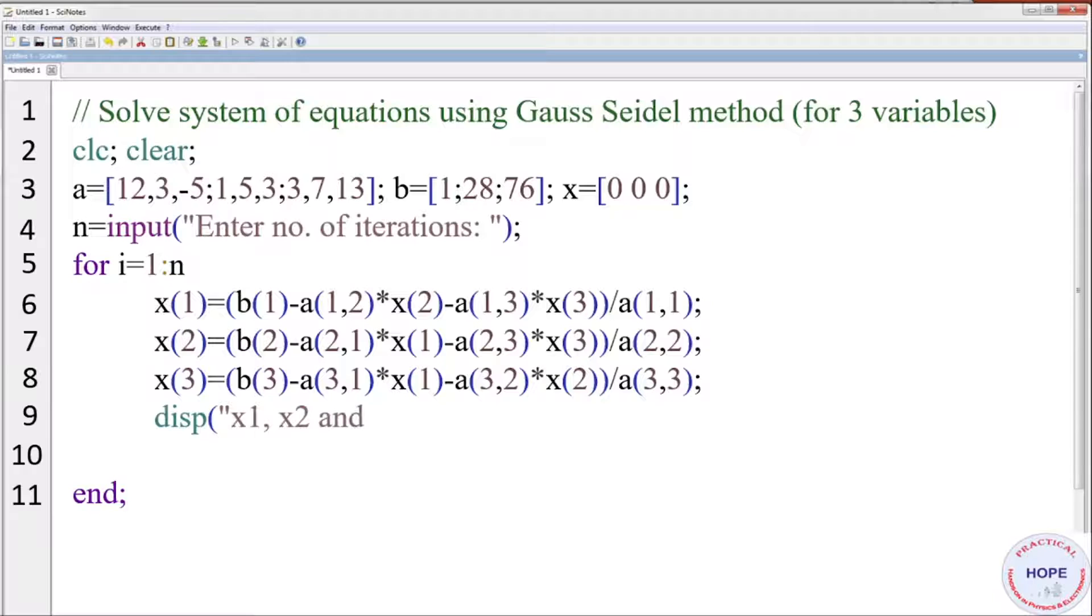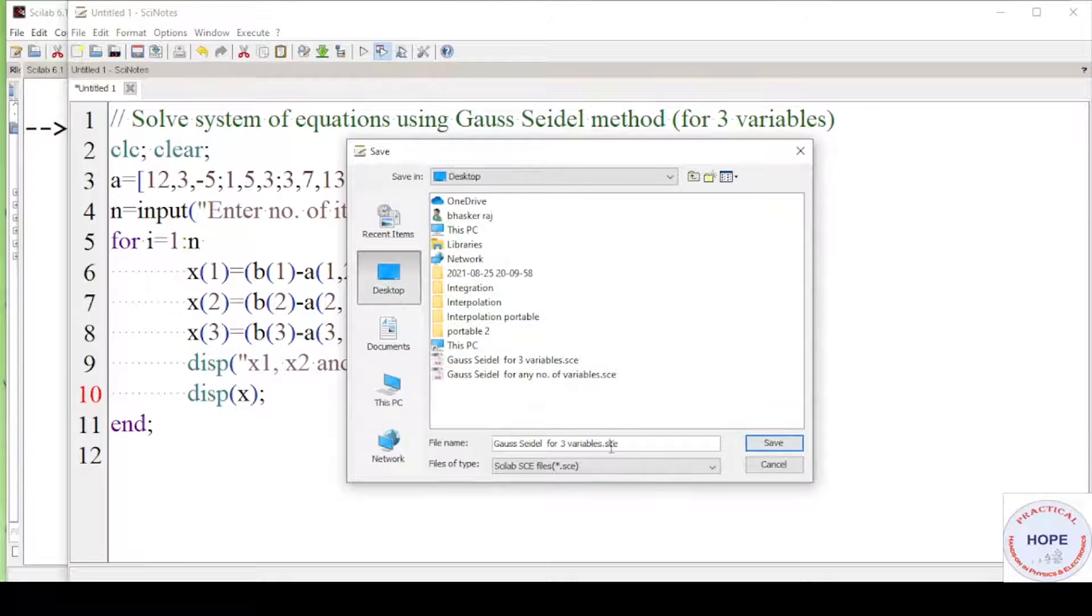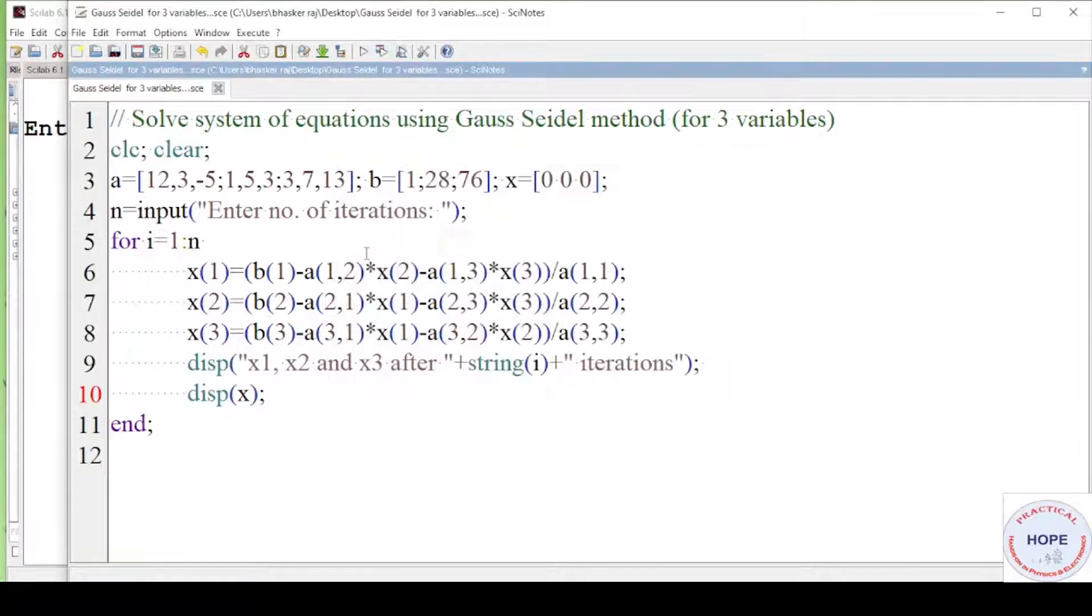Now we can display x1, x2 and x3 after ith iterations. Finally display x. Minimize it. Execute it. We need to save it. Go to the console.